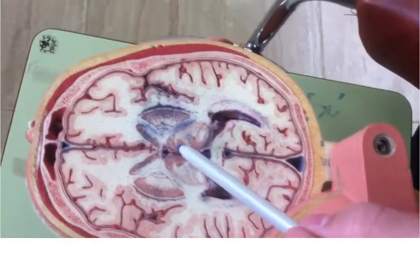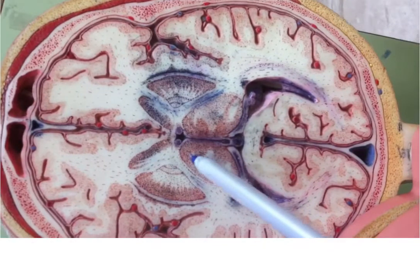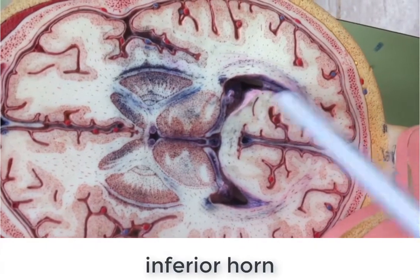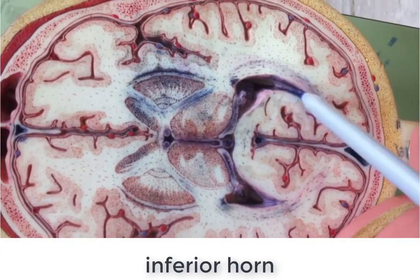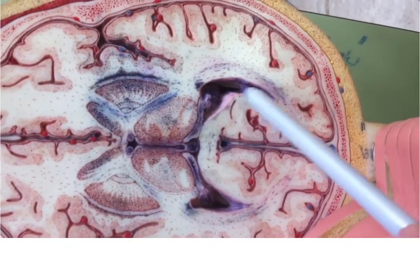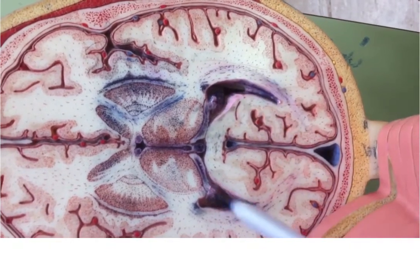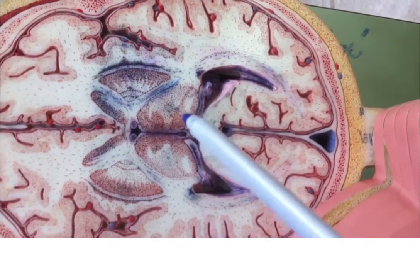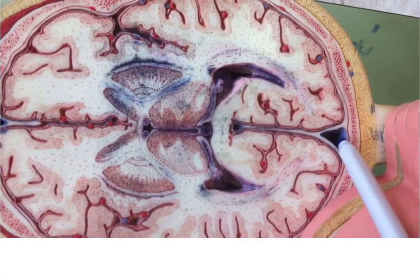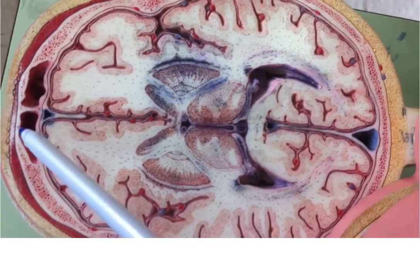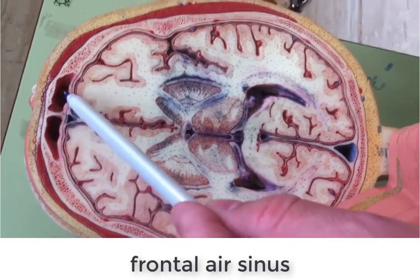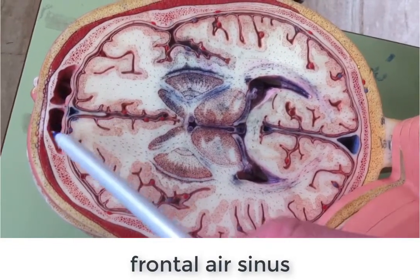Going to more sections, I can see a very big structure which is the thalamus, and this is the posterior horn of the lateral ventricle. Because it is lower down than the anterior, this is the inferior horn — which is lower down than the posterior and the anterior. Still the falx, inferior sagittal sinus, superior sagittal sinus, and the brain tissue. I can see anteriorly there are two cavities inside the bone — this is the frontal air sinuses.